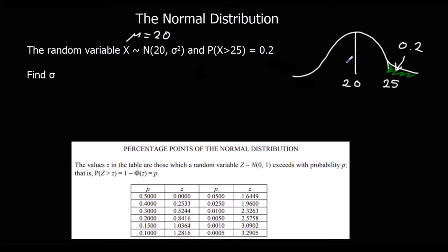So this time we need to go from the probability to the standardized score. So we're going to find our z number, find the standardized score, and then put it into the formula.